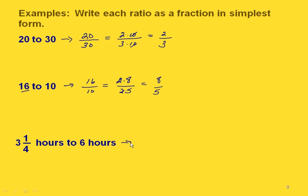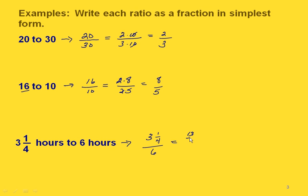If we have three and a fourth hours to six hours, that gives us three and a fourth on top and six on the bottom. To write this in simplest form, we rewrite three and a fourth as an improper fraction. Multiply three times four to get 12, then add one, giving us 13. So we have 13 fourths on top and six in the denominator.